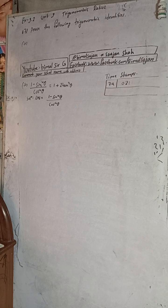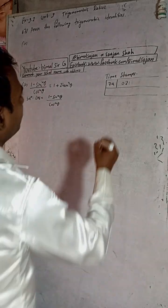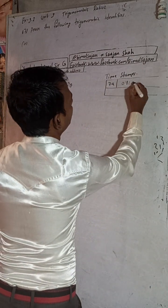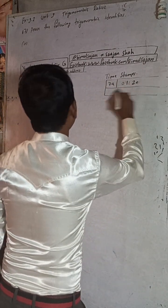Question 7. The question is: prove the following trigonometric identities. I have written number A. I will solve number A — the time stamp for this will be 1 minute 20 seconds.